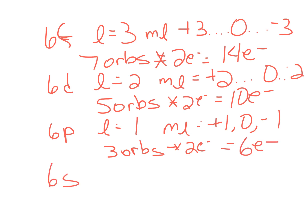And finally, there is 6s, which means l equals 0, which means m sub l equals 0. So that is going to be 1 orbital, and multiplied by 2 electrons, that's 2 electrons total.